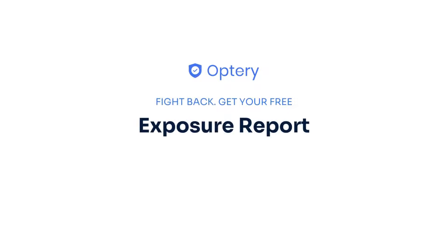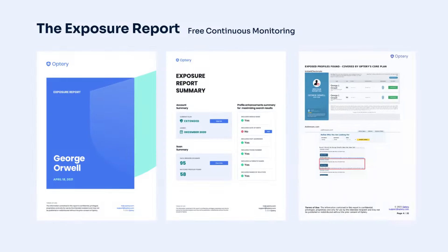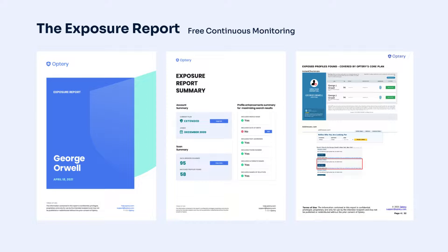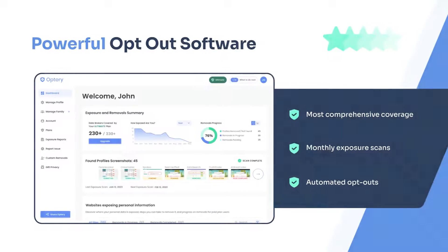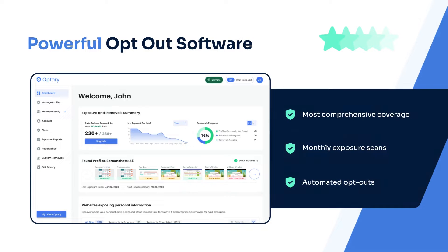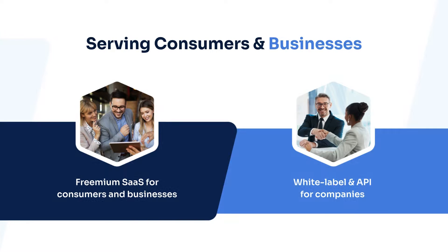That is why Optory offers the free exposure report. The exposure report shows screenshots from sites that have your data, with links to let you see that data right on the site. Use the exposure report and our how-to guides to opt yourself out for free, or sign up for an Optory paid plan and Optory will handle the monitoring and removals for you and your family members.